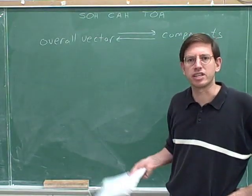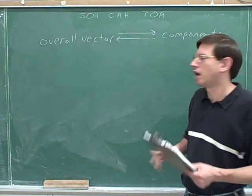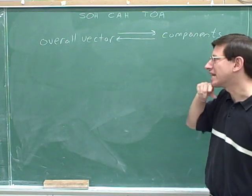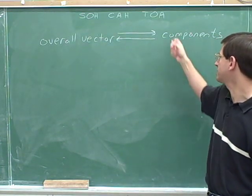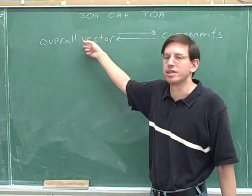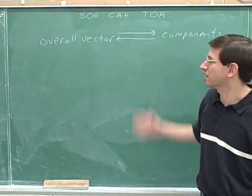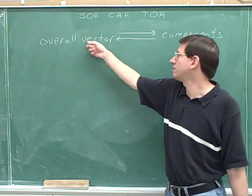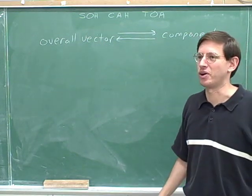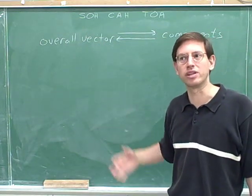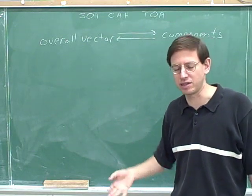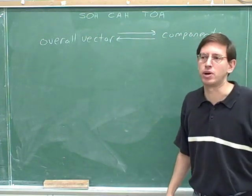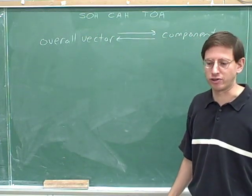Remember that we have two big goals in this series of videos. One goal is to learn how to take an overall vector and break it down into its components. The other goal is to learn how to take the components of a vector and build them up into the overall vector. We've accomplished the first half of that goal — we have learned how to take an overall vector and break it down into components. I hope you feel you've made good progress on that skill.